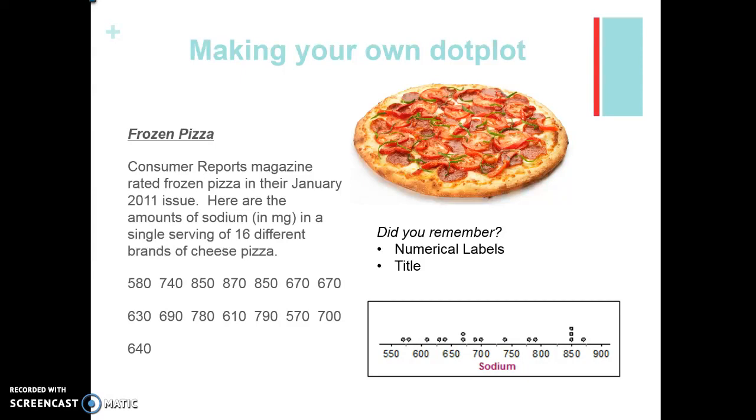The question is when you did this, number one, did you remember your numerical labels? You'll get points taken off if you don't have that on there on the AP exam and in this course. Did you label the horizontal axis as sodium? And did you make sure you have each of your individual dots on your graph? Labels - people forget labels, especially the numerical ones.